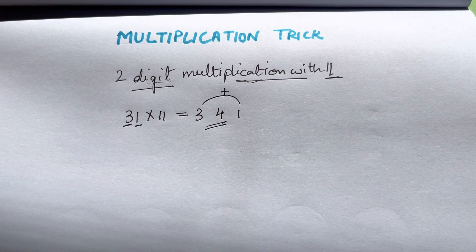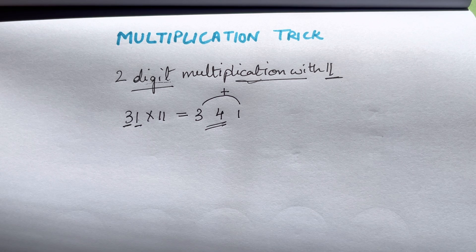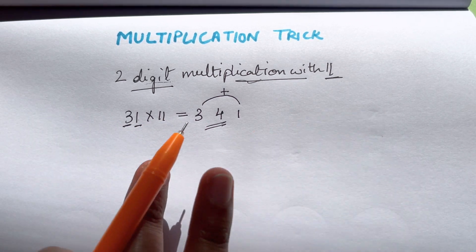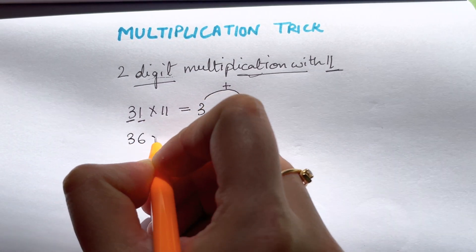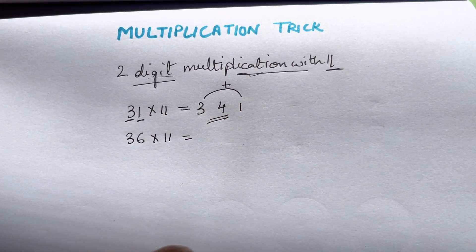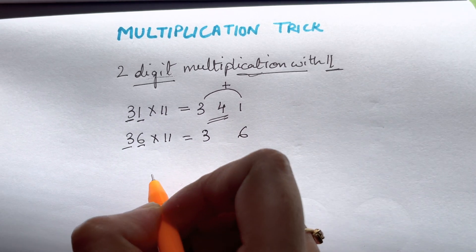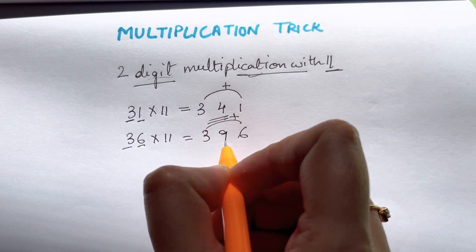So didn't you get it in one second? Just in your mind you have calculated. Now I'll give you another example like 36 times 11. Just in your mind put 3 and 6 at the last and add them together. That'll be 9, so 396. Amazing.